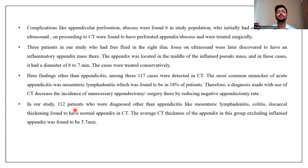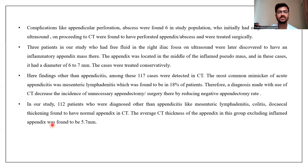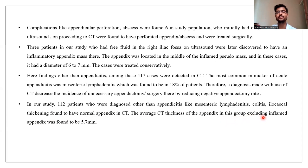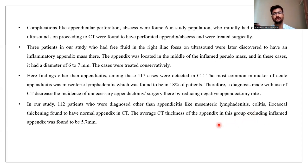Findings other than appendicitis among 117 cases were detected on CT. The most common mimicker of acute appendicitis was mesenteric lymphadenitis, found in 18% of patients. Therefore, a diagnosis made using CT decreases the incidence of unnecessary appendectomy, reducing negative appendectomy rates. In our study, 112 patients diagnosed with conditions other than appendicitis, such as mesenteric lymphadenitis, colitis, and ileocecal thickening, were found to have a normal appendix on CT. The average CT thickness of the appendix in the group excluding inflamed appendix was found to be 5.7 mm.